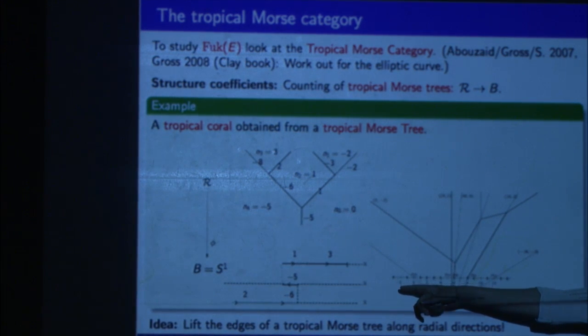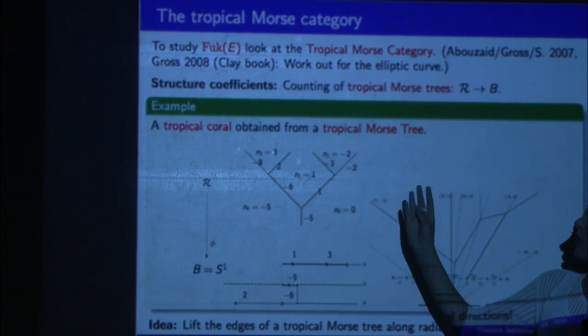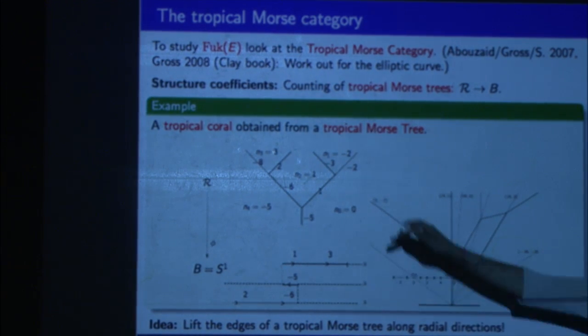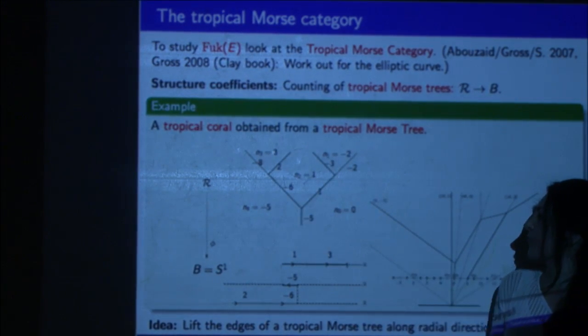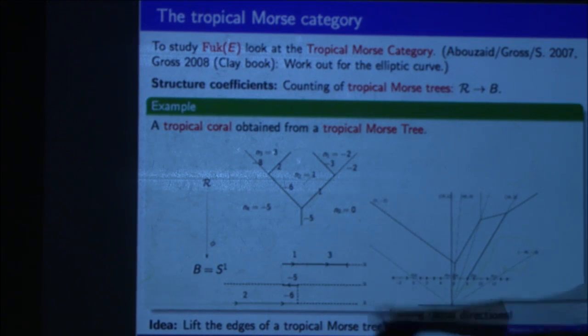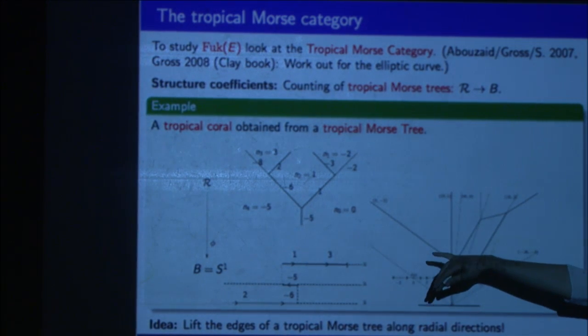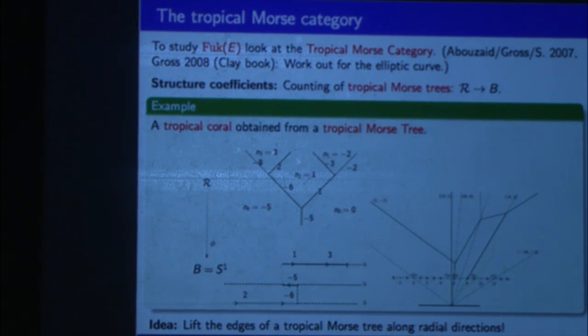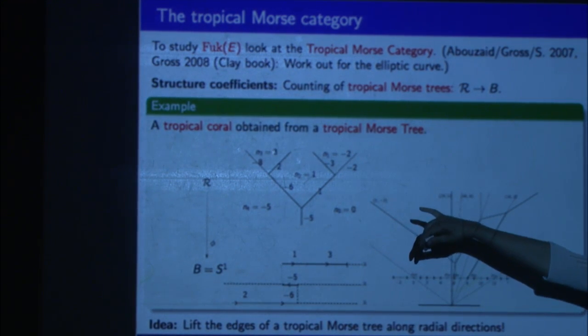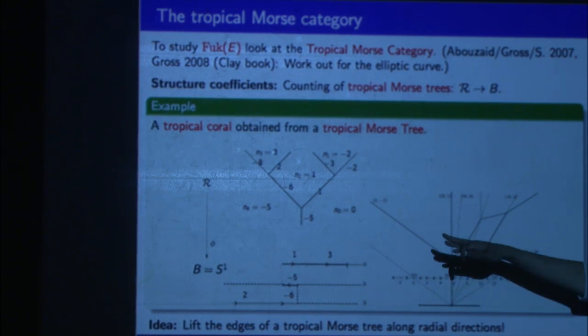In our case, for the elliptic curve, it's an S1. The objects in this category is integers. You just put integers on regions that your ribbon graph separates. And then you endow each edge of your ribbon graph with some integer by taking the differences of these integers. And then you put some assumptions ensuring balancing conditions on these vertices and some further assumptions. And then what we do is we wanted to define a count for these tropical Morse trees that determine the A-infinity structure on the elliptic curve. For the elliptic curve, the A-infinity structures worked out using these tropical Morse trees by Mark Gross in the Tropical Book.